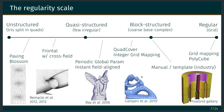So we took a step back and instead of directly doing a very nice block-structure quad mesh — on the right of the scale — we went the easy way, which is to build an unstructured quad mesh. For this, we can just use simple techniques such as frontal point insertion.